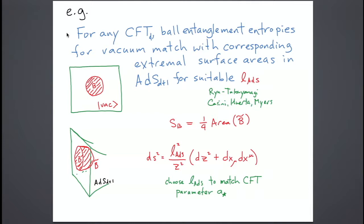Let me start with a simple situation: the vacuum state of conformal field theory in D dimensions. There's a statement that if you look at the entanglement entropy for any ball-shaped region in any frame of reference, this is generally divergent, but there are finite quantities you can extract. A famous example is in 1+1 dimensional CFT: the entanglement entropy of an interval gives c/3 times log(L/ε), where ε is a cutoff. Taking the derivative with respect to the size of the region removes the cutoff dependence. Similar things work in higher dimensions, giving finite universal quantities from ball-shaped entanglement entropies.